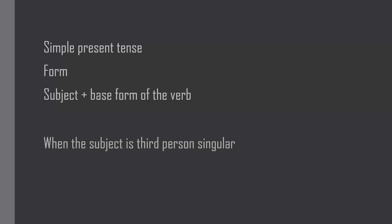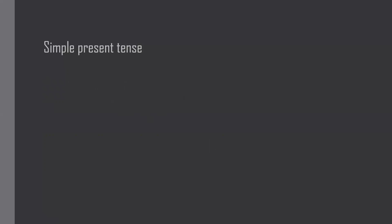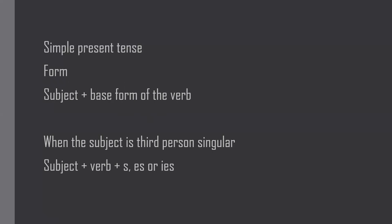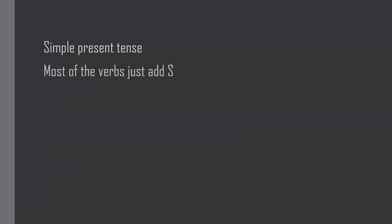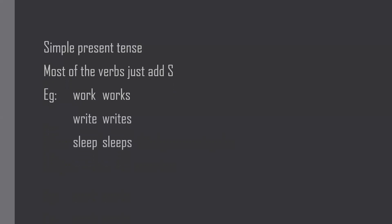One more thing to remember: when the subject is third person singular — he, she, or it — we add S, ES, or IES to the verb. If the subject is first person, second person, or third person plural, we use Subject + base form. If the subject is third person singular, we add S — for example: work/works, write/writes, play/plays, sleep/sleeps.